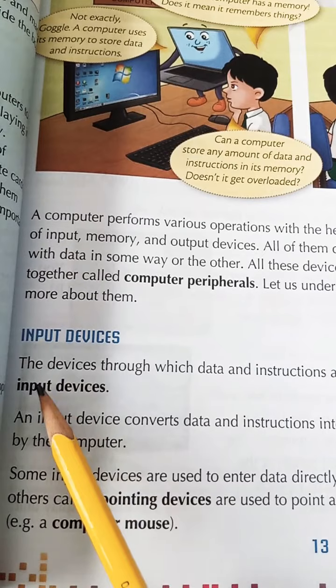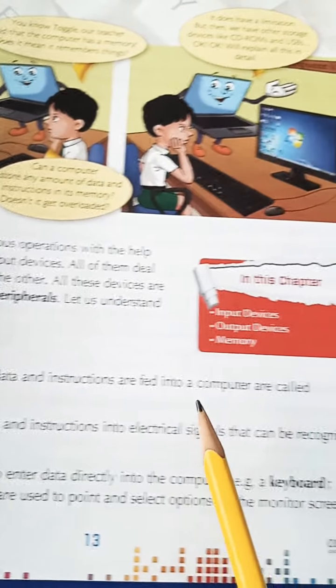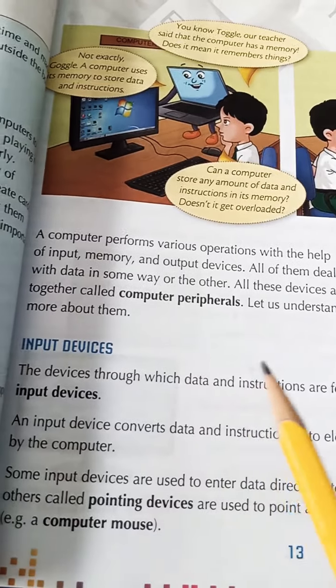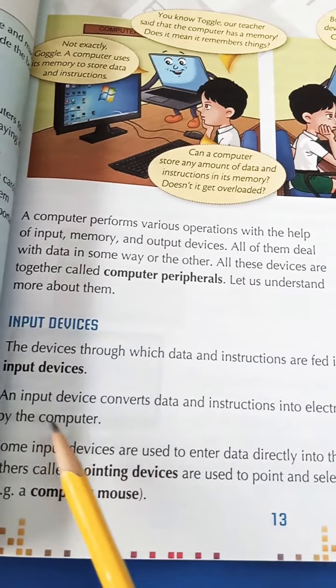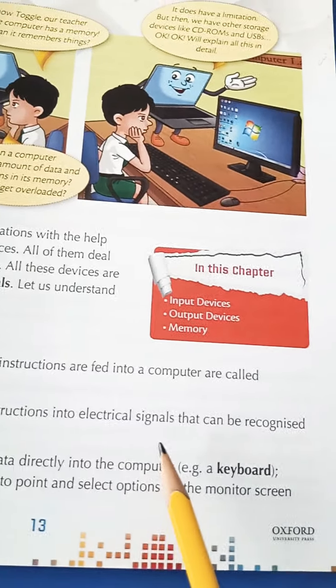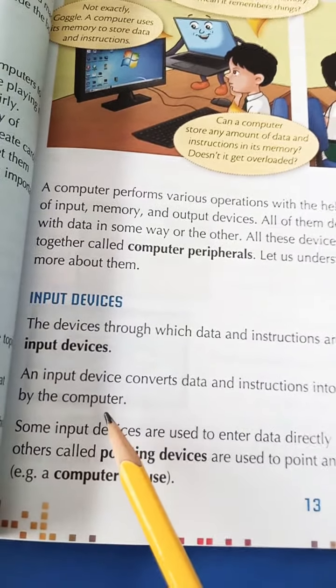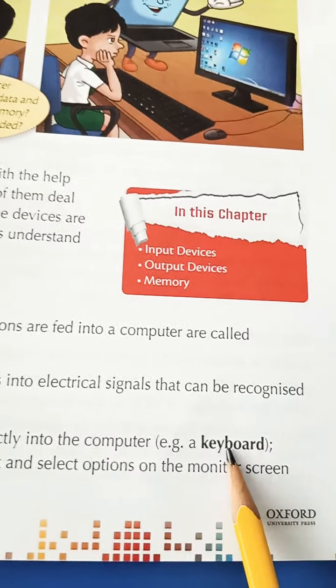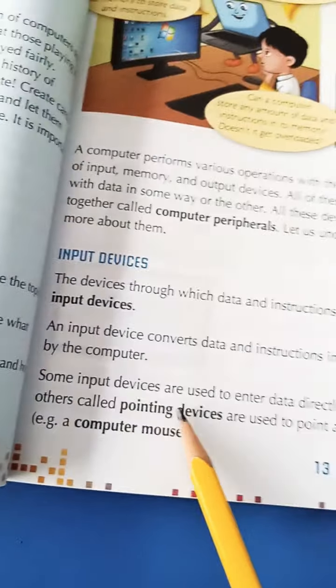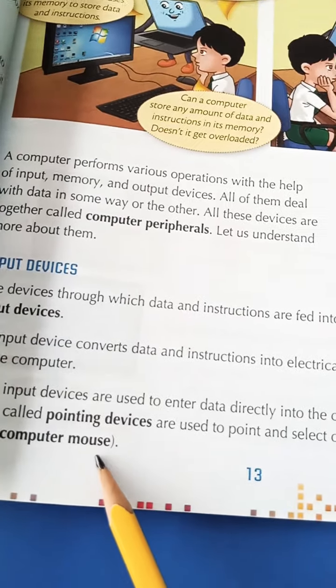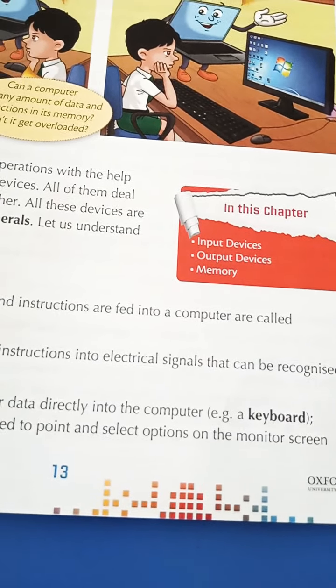What is the definition of input devices? The devices through which data and instructions are fed into a computer are called input devices. Beta, jinke zariye hume data or instructions computer me feed karte hain ya computer ko dete hain. Input devices kya karti hain? Beta, kaam data or instructions ko convert karti hain electrical signals mein that can be recognized by the computer. Computer, kuch input devices hain like keyboard jisse directly hume type karte hain. Mere saamne monitor mein aata jata hai. Kuch pointing devices hain, for example, computer mouse, jinko hume select karte hain monitor screen per.